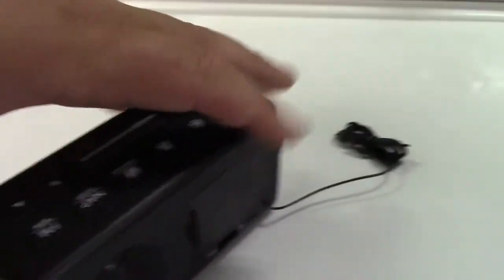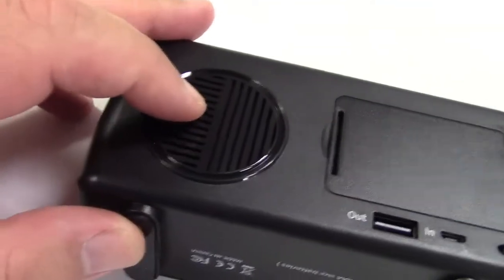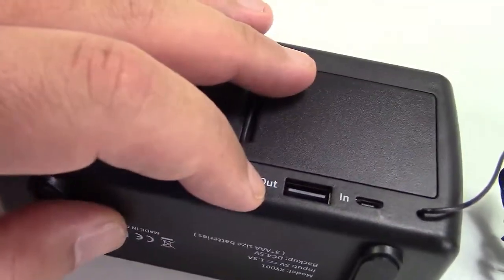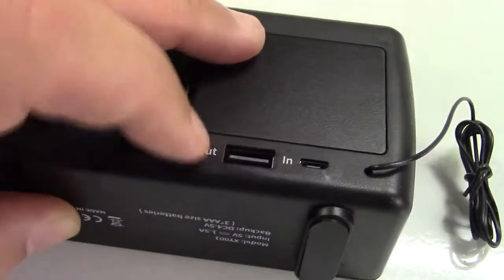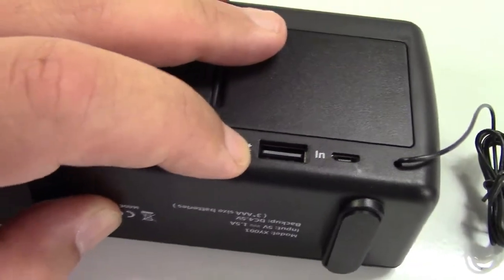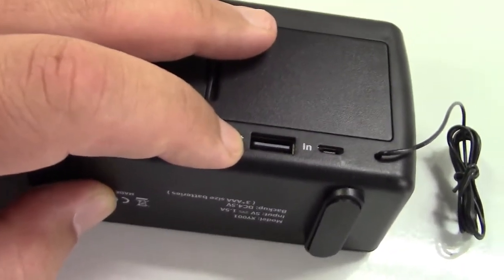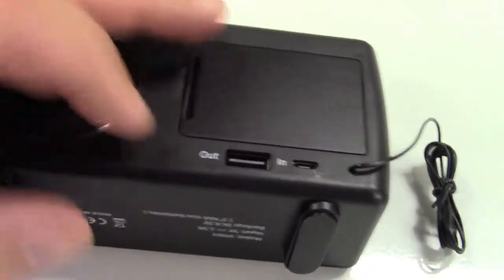The back of the clock is over here. Here's the speaker for the radio. This is over here where the wire that's included plugs in to give the clock power, and you have a USB port to charge your phone. You'll have to use your own cable.